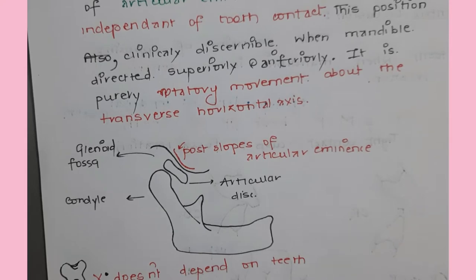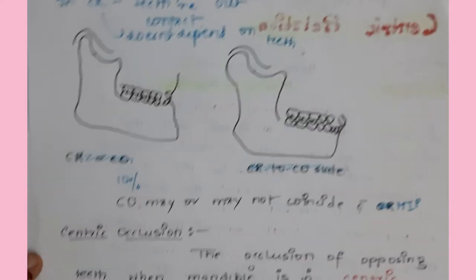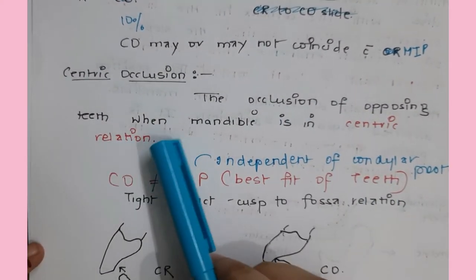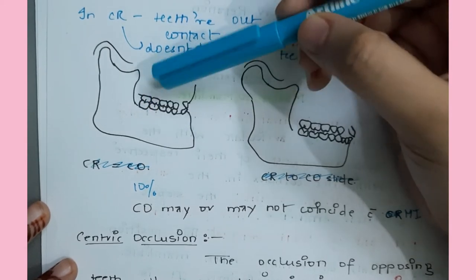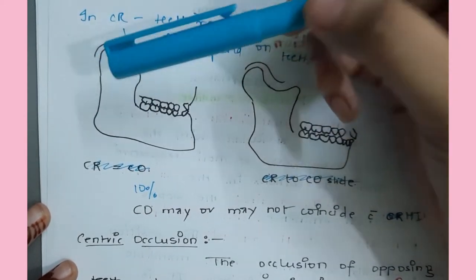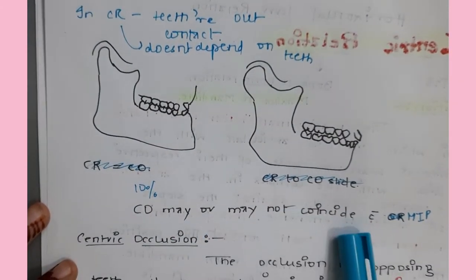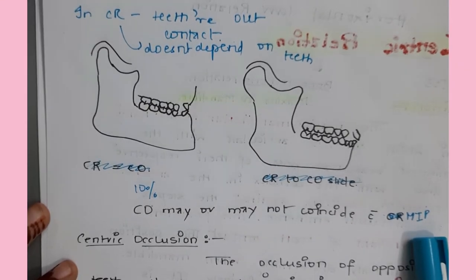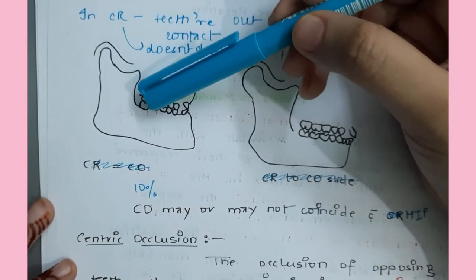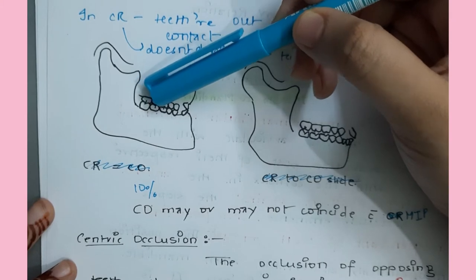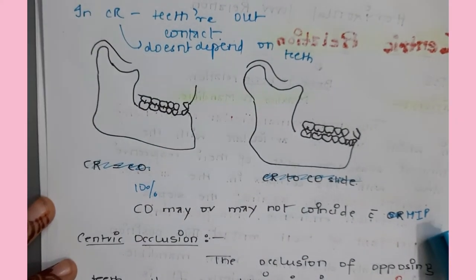No contact of teeth exists in centric relation. Now there is another term: centric occlusion. The definition is the occlusion of opposing teeth when the mandible is in centric relation. But centric occlusion may or may not coincide with maximum intercuspation - it is not necessary that centric occlusion has to be maximum intercuspation. Centric occlusion does not coincide with maximum intercuspation.